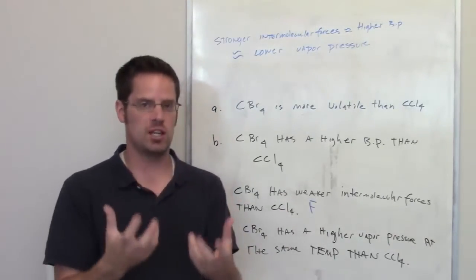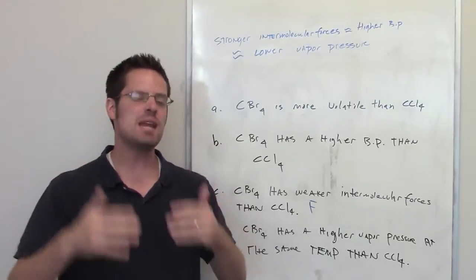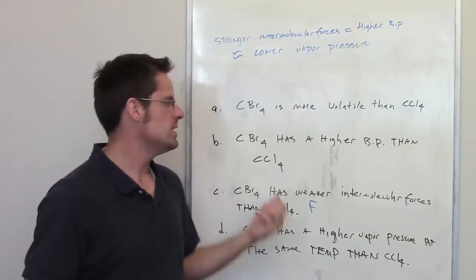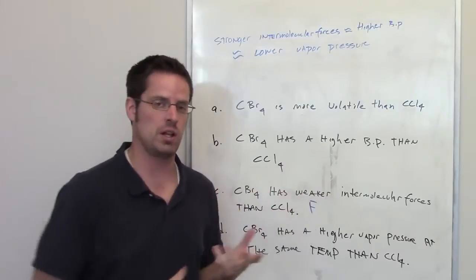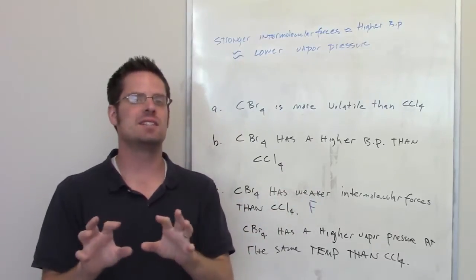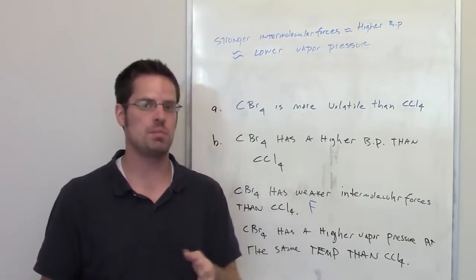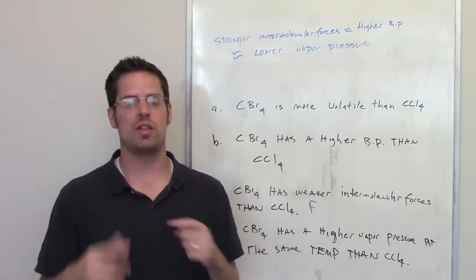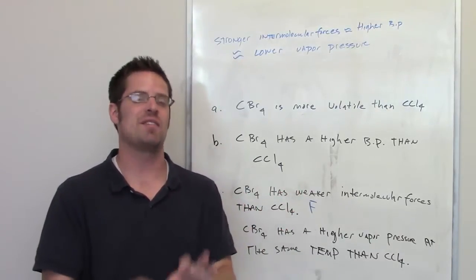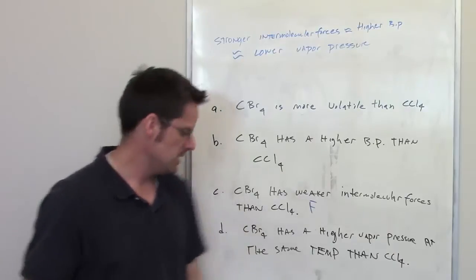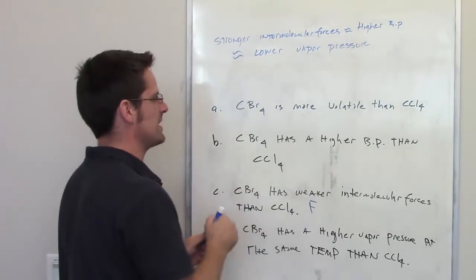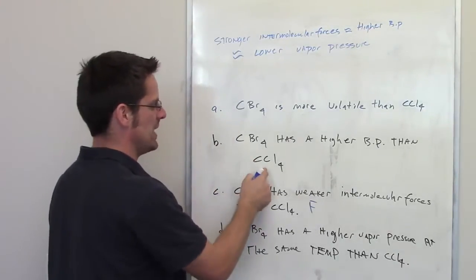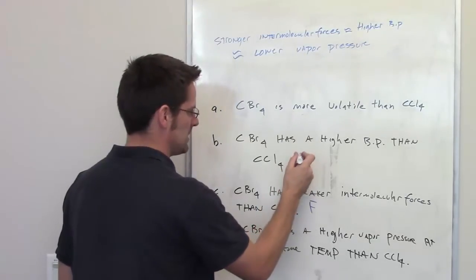that when you have two molecules that have the same kinds of intermolecular forces, such as London forces in these two molecules' case, the only way you can tell the difference between boiling points is going to be size. If all other things are equal, the larger molecular weight is going to have a larger boiling point. So that means that carbon tetrabromide is going to have a higher boiling point than carbon tetrachloride. So that statement is true.